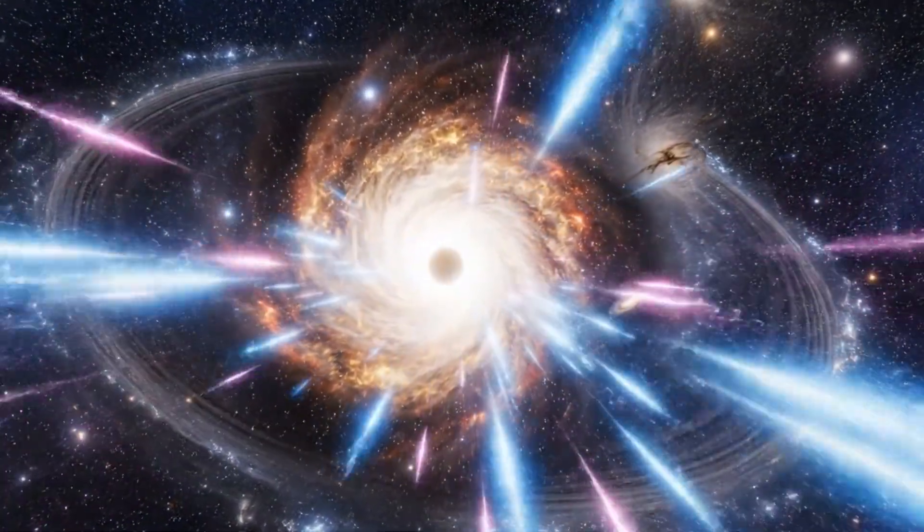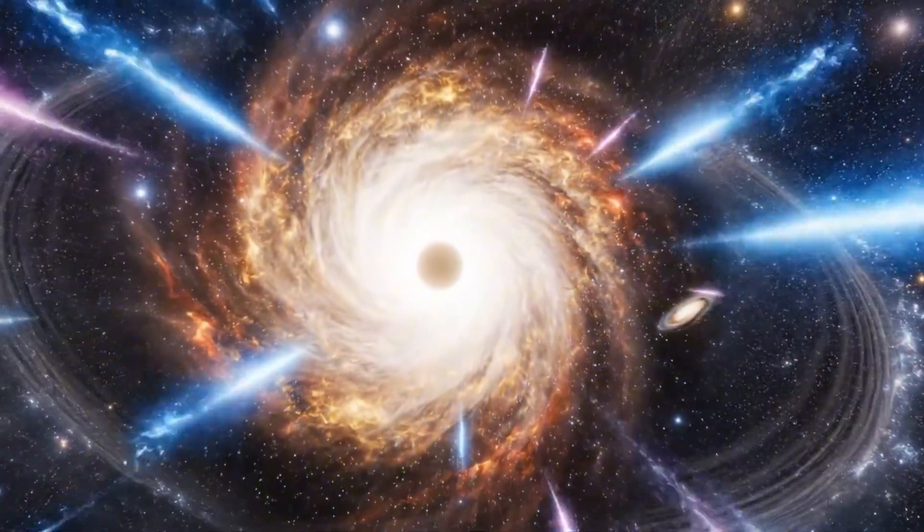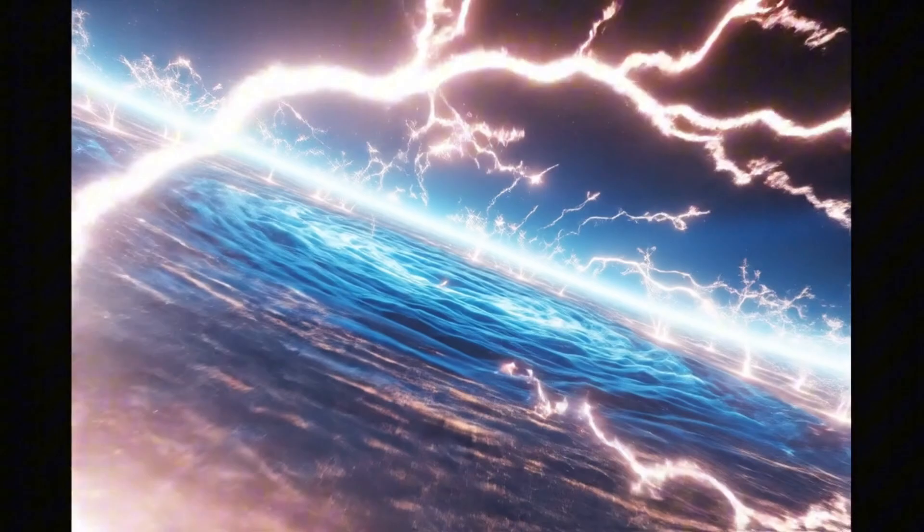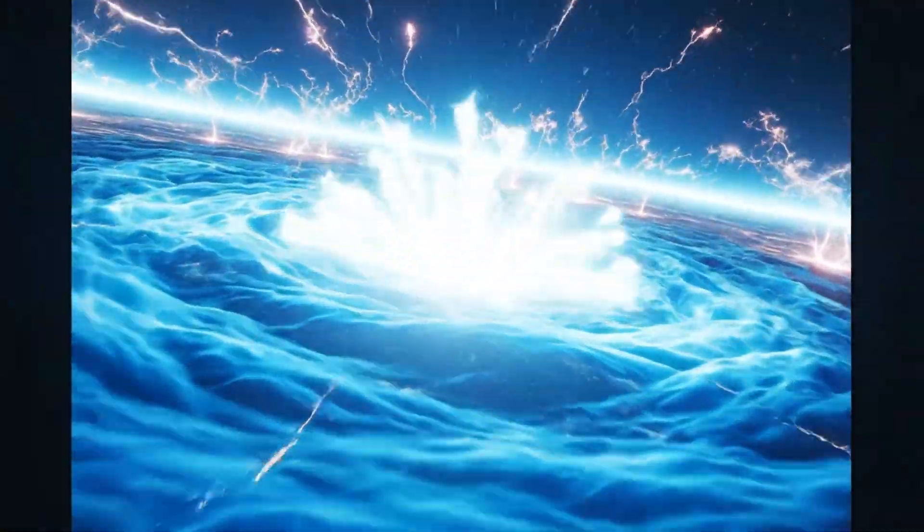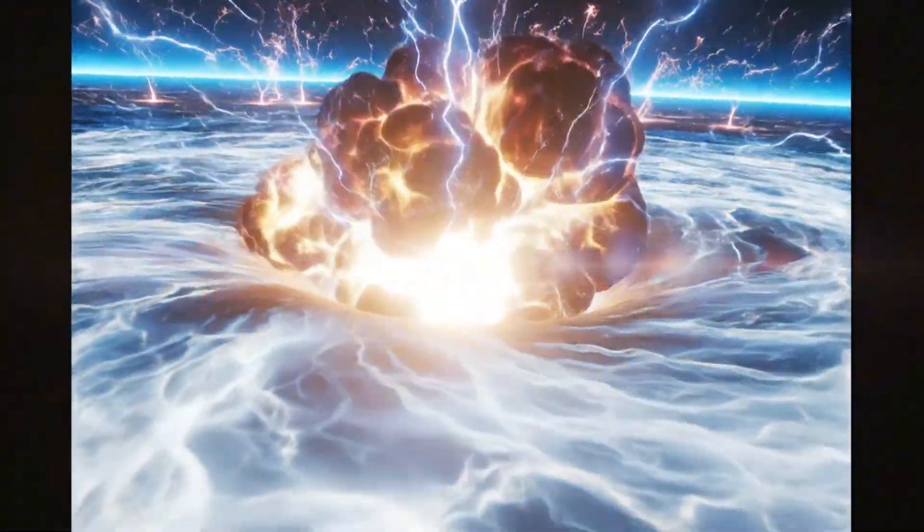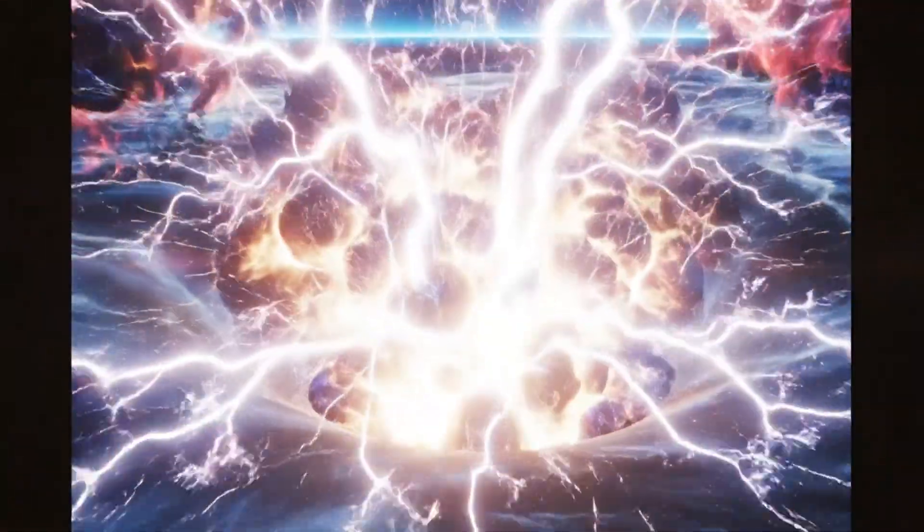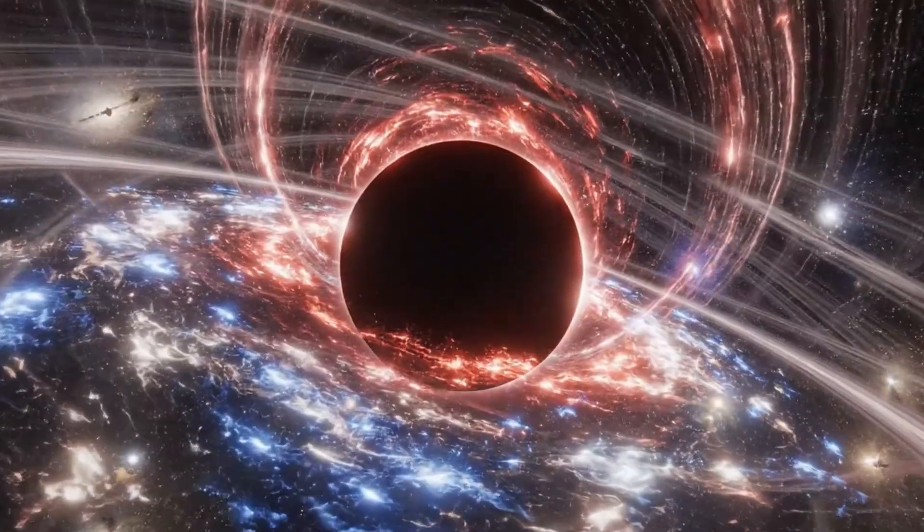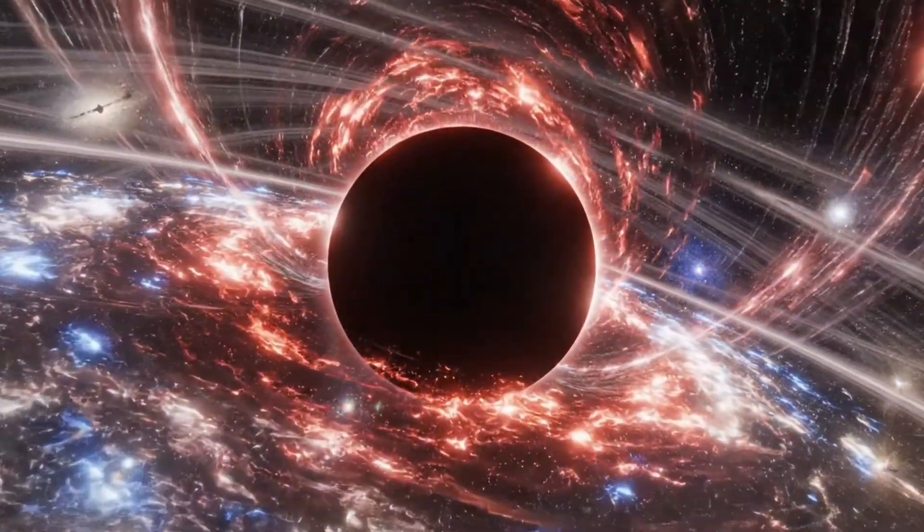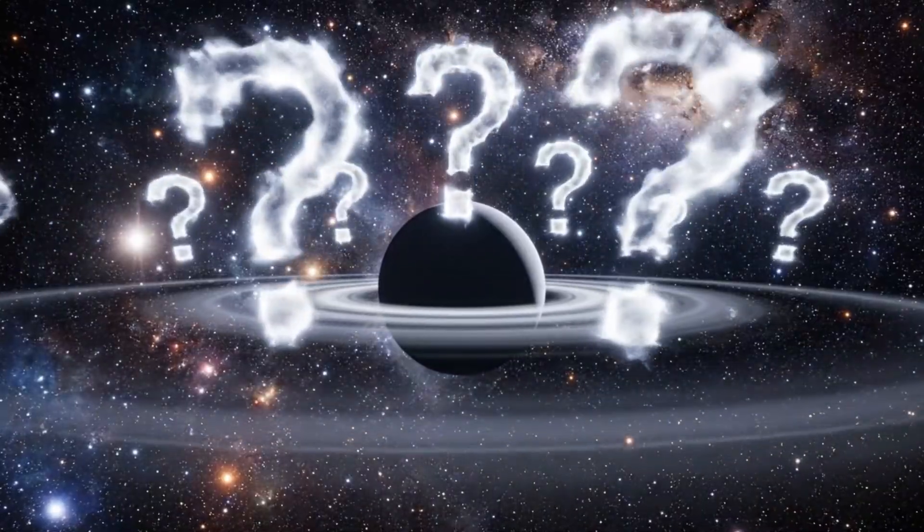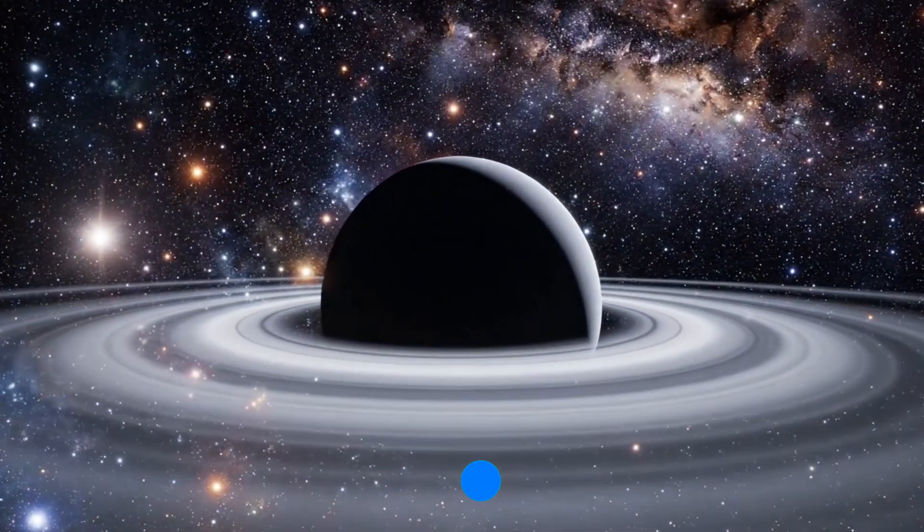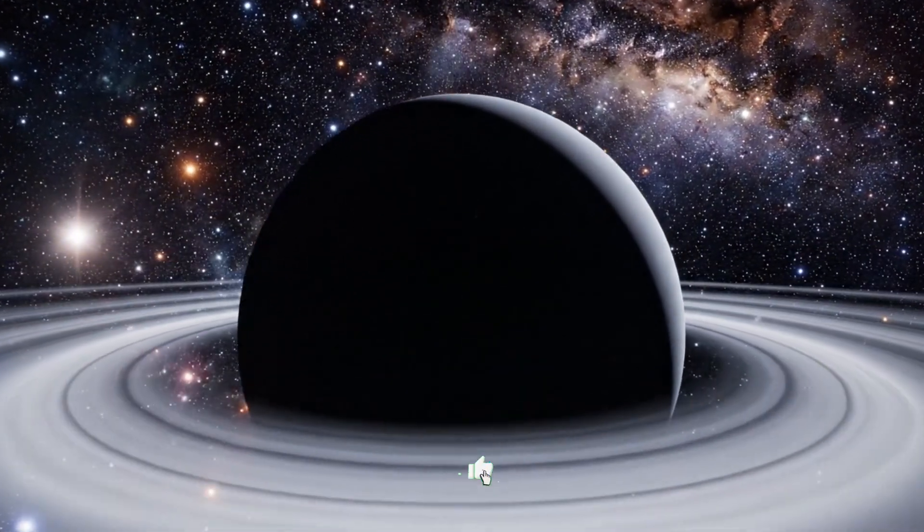TON 618 carries a mass of 66 billion suns, and NASA places it among the heaviest black holes ever measured, a weight so extreme it already pushes beyond what our models consider possible. Its event horizon stretches nearly 400 billion kilometers, almost 1,300 astronomical units, which means the entire solar system from Mercury to Pluto could fall inside it with space still left untouched.